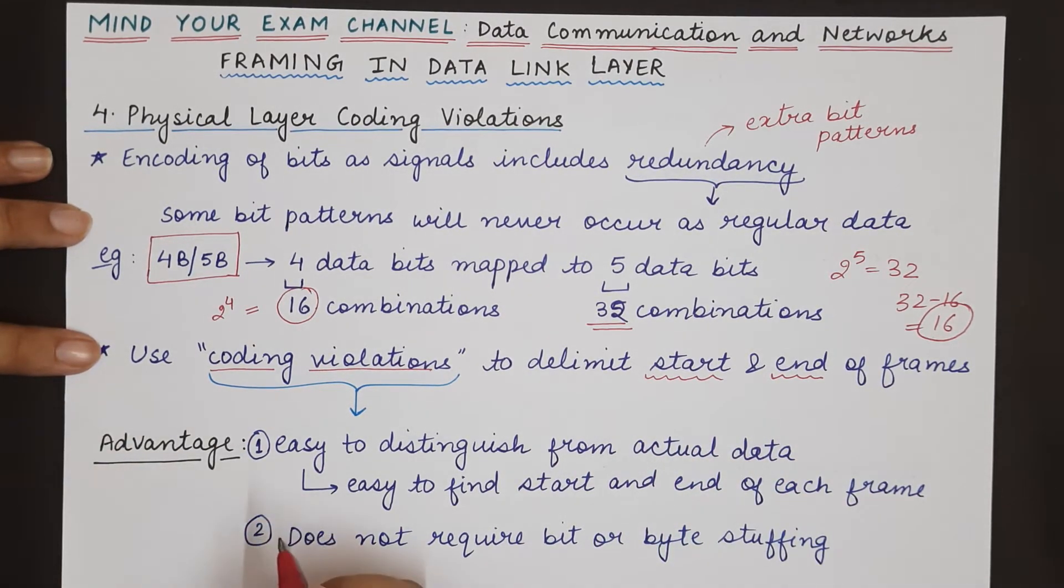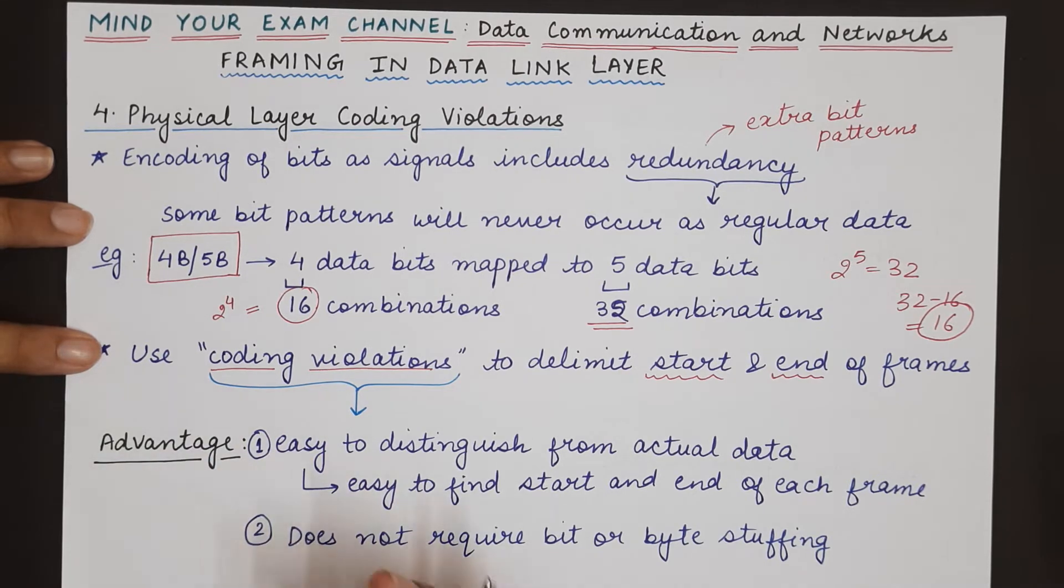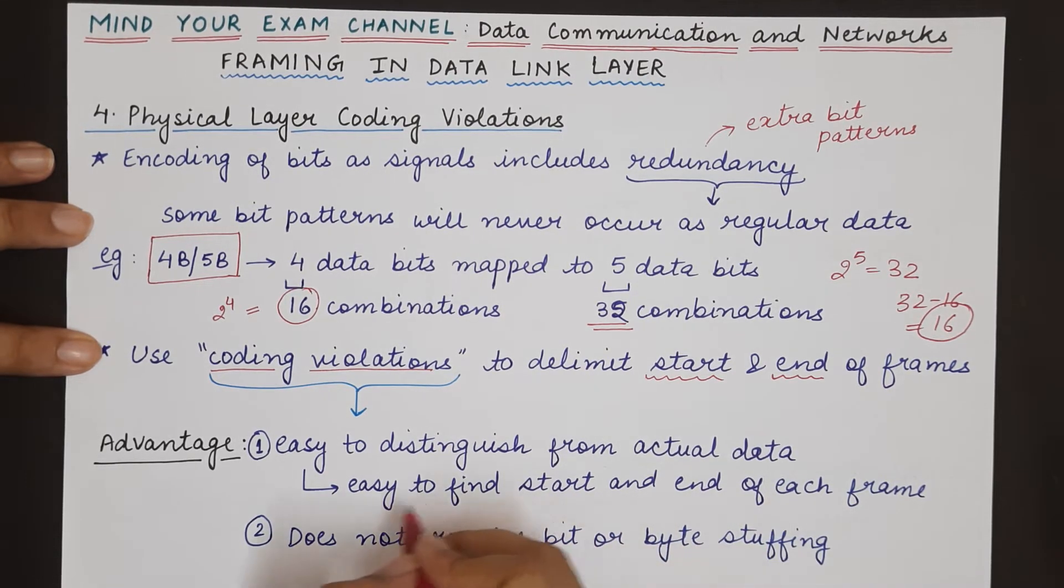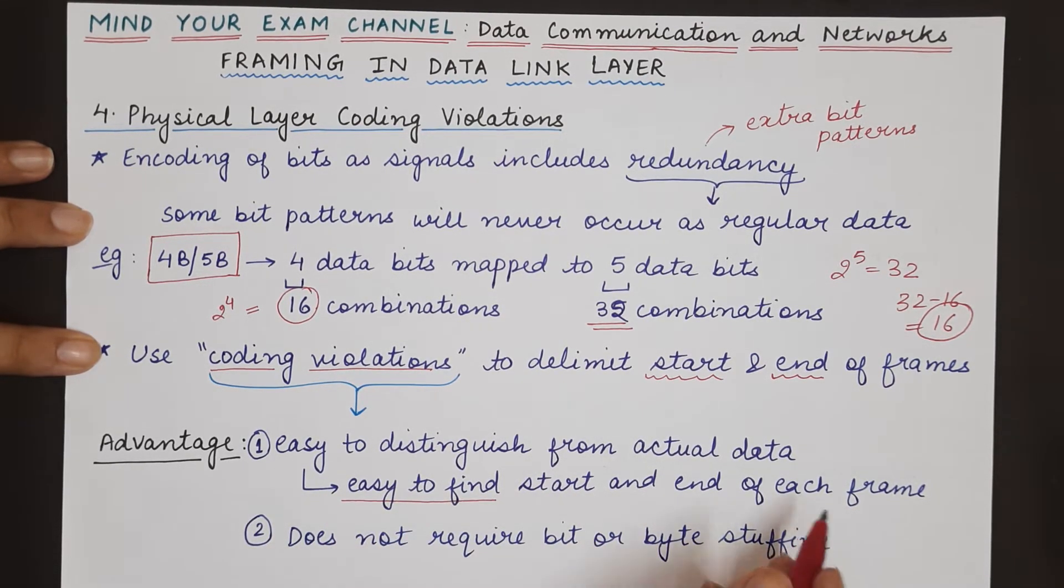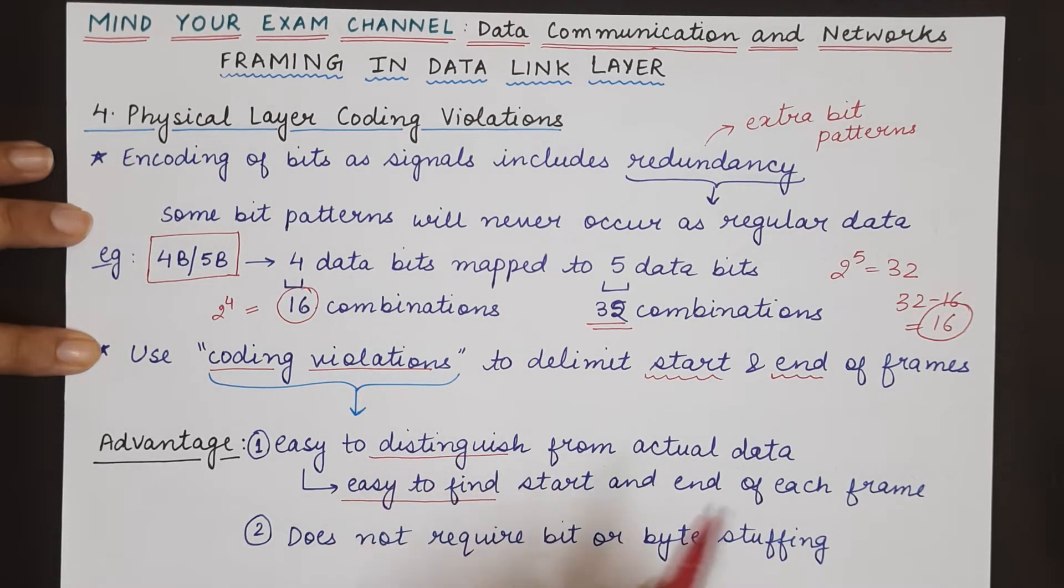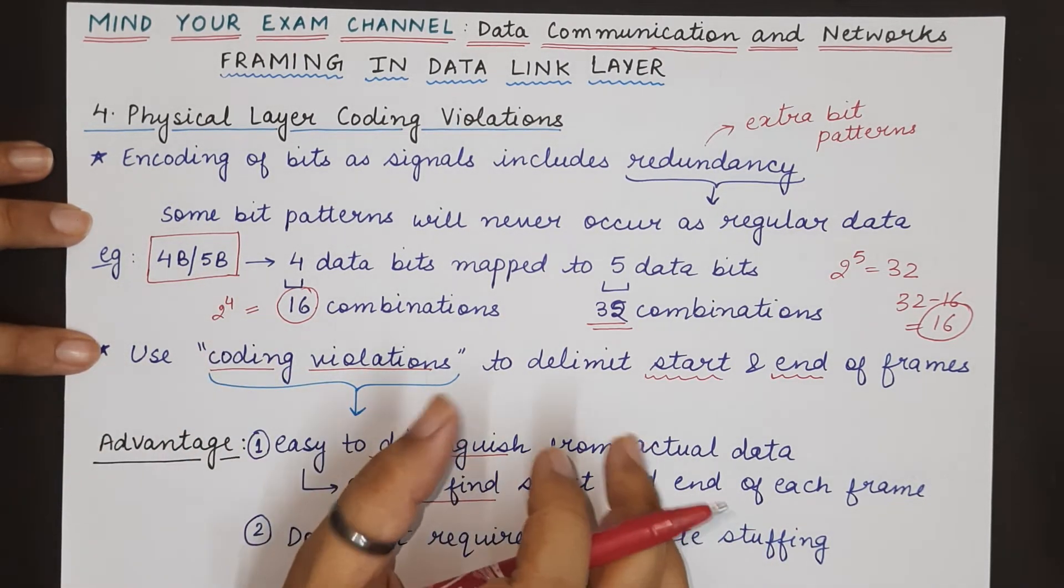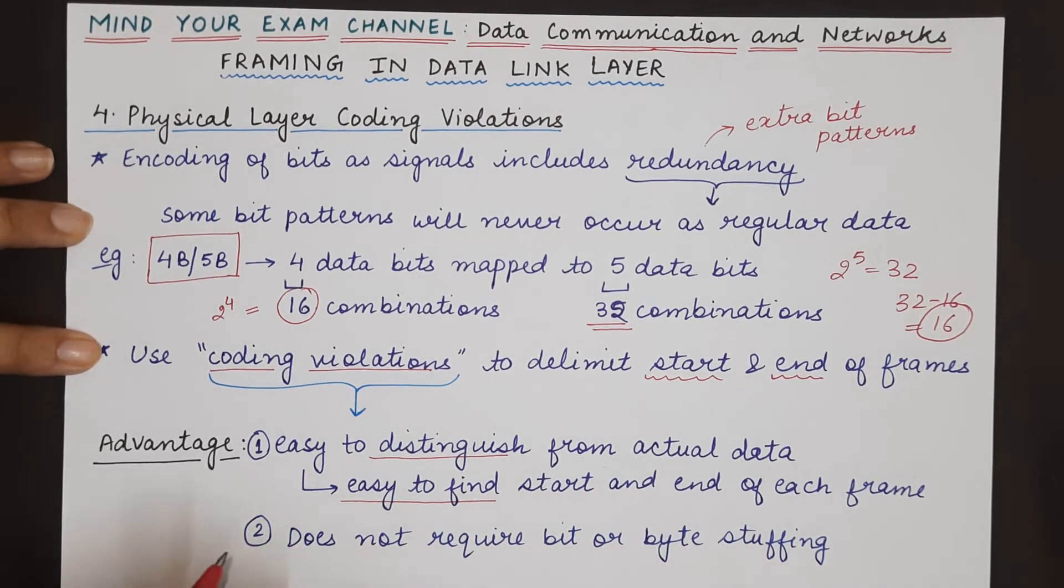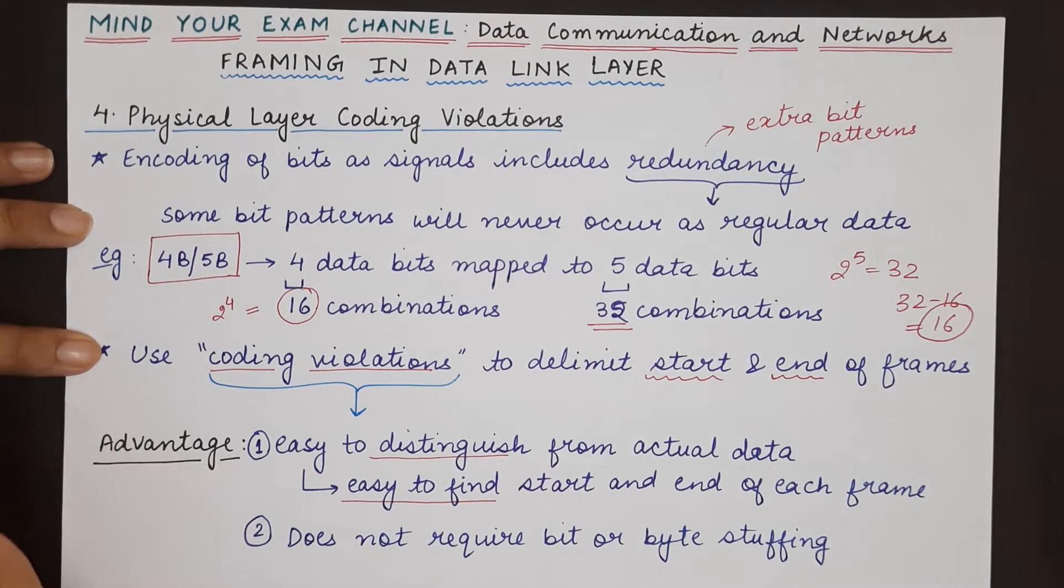What is the advantage of using these coding violations? Firstly, these starting and ending delimiters can never occur in data, so it is very easy to find the beginning and ending of the frame and it is very easy to distinguish the starting and ending of the frame from actual data. Secondly, this technique is the only one that does not require any kind of bit or byte stuffing.